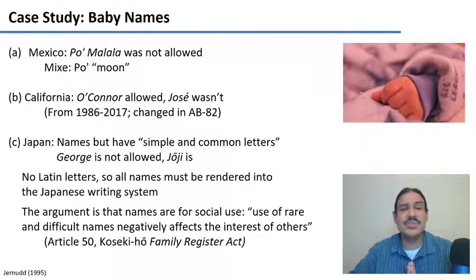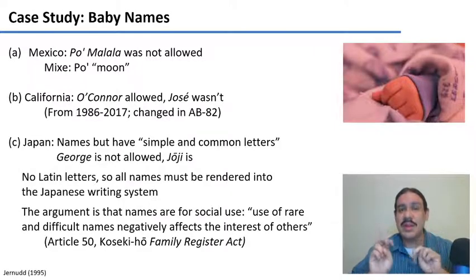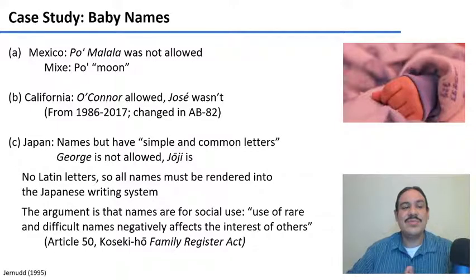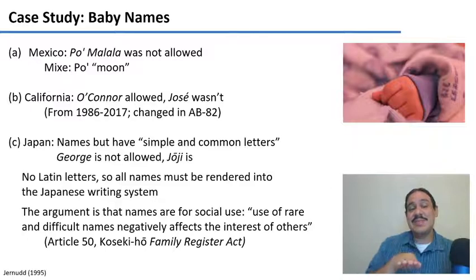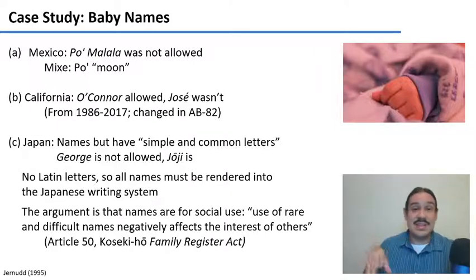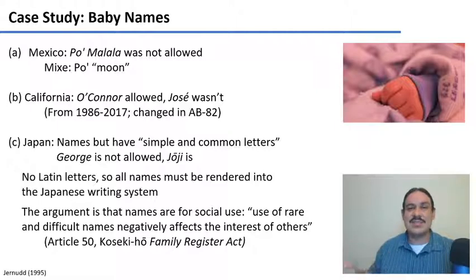In Japan, there are strict laws saying that names have to be in simple or common letters — in practice, kanji or the other characters in the Japanese writing system. So if you want to name your child George, that's not allowed; you'd have to use the Japanified form 'Joji.' They have the philosophy that even though names are personal, names are ultimately for social use, and that the use of rare and difficult names negatively affects the interests of others and of society.